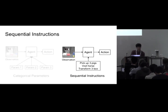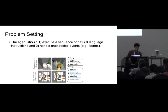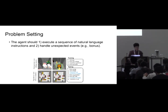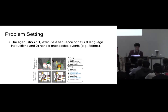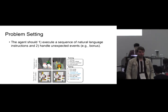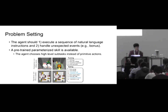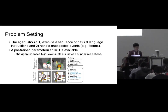Now we consider sequential instructions. In this problem, the agent has to execute a given sequence of natural language instructions, like 'go to peak', 'pick up three sheets', and so on. The agent also has to handle unexpected events, like an unexpected bonus or emergency situation. We assume a pre-trained parameterized skill is available to the agent, which means the agent can choose high-level sub-tasks instead of primitive actions, making the problem a little simpler.